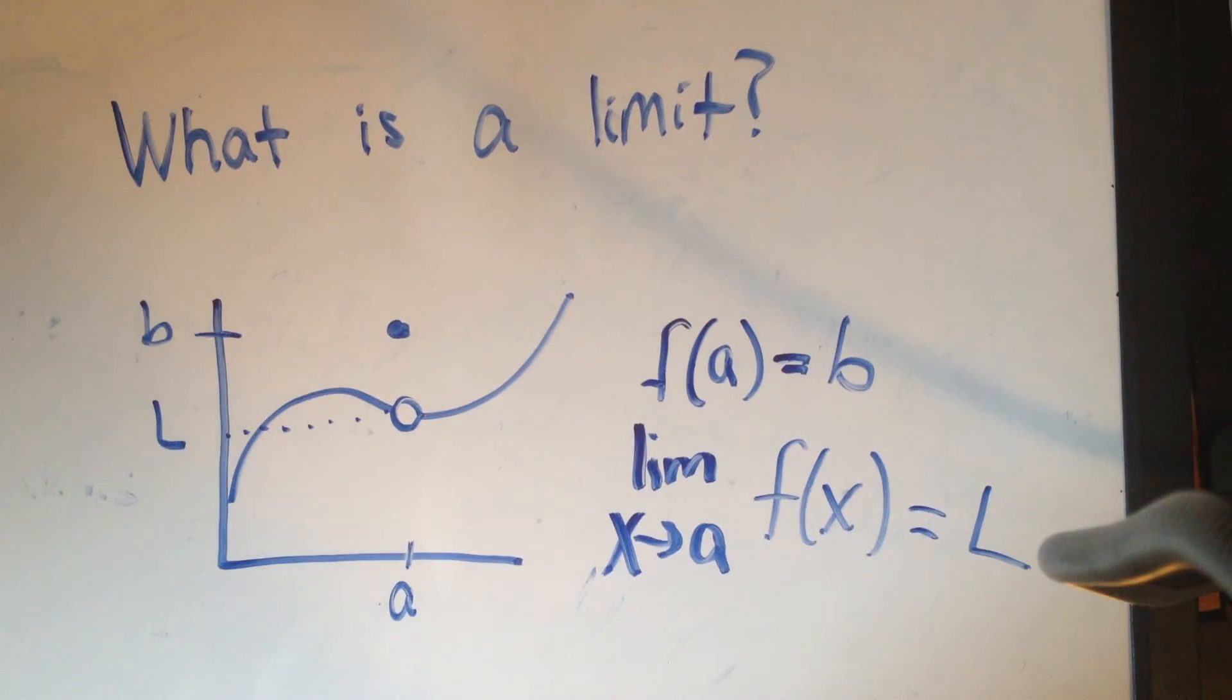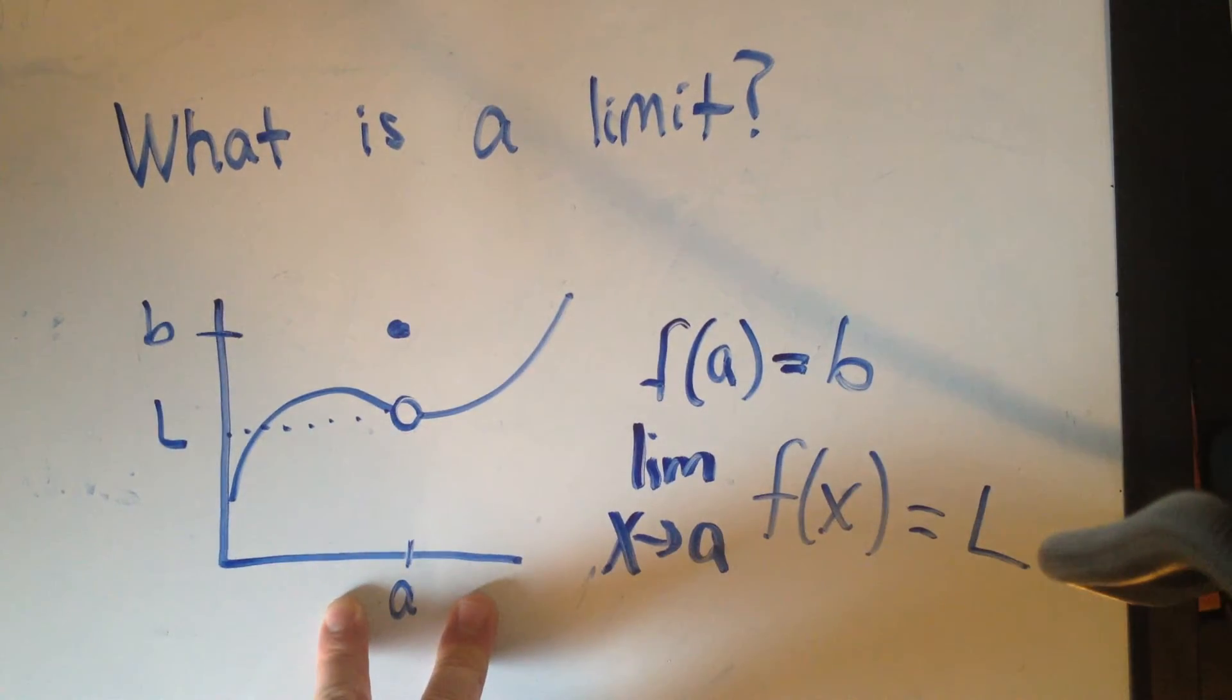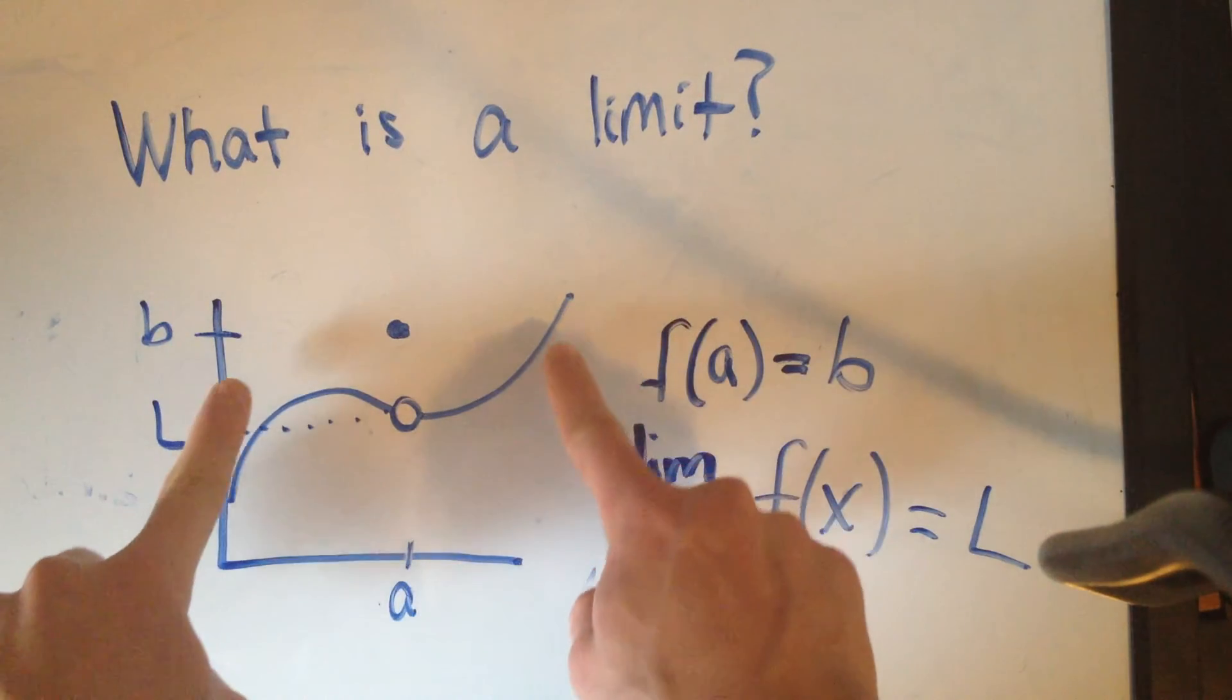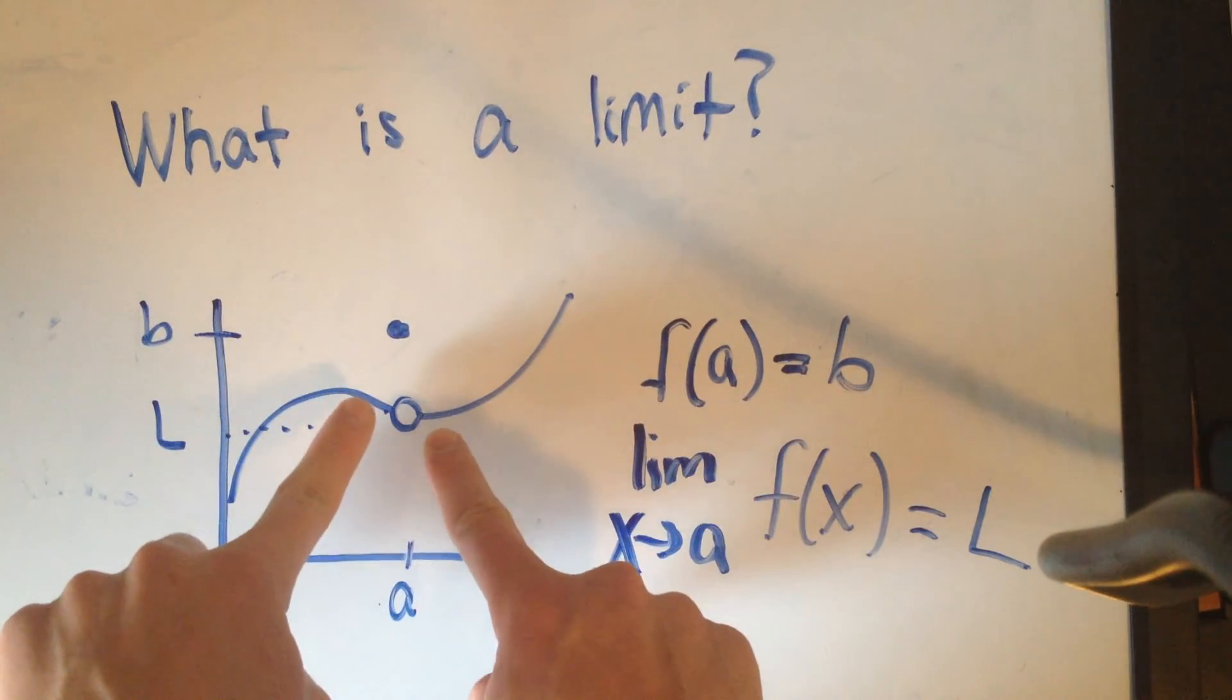All we have to know for what a limit is, is what's happening very close to A. So as I approach A from both sides, as I get sufficiently close to A, I'll know what the limit is.